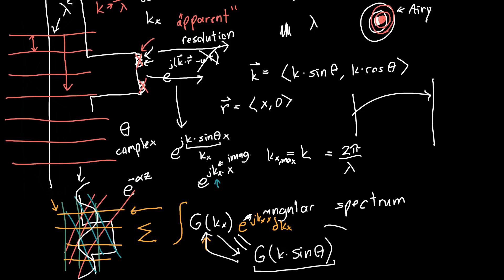For this, we kind of have to let theta be complex, because we want to be able to phase-shift these waves by a little bit. So kx is really a more easy-to-wrap-your-head-around concept once we start to have to deal with complex quantities. But this concept of the angular spectrum, I think, is intuitively much more physically satisfying, because it corresponds to a physical reality: plane waves tilted at different angles.